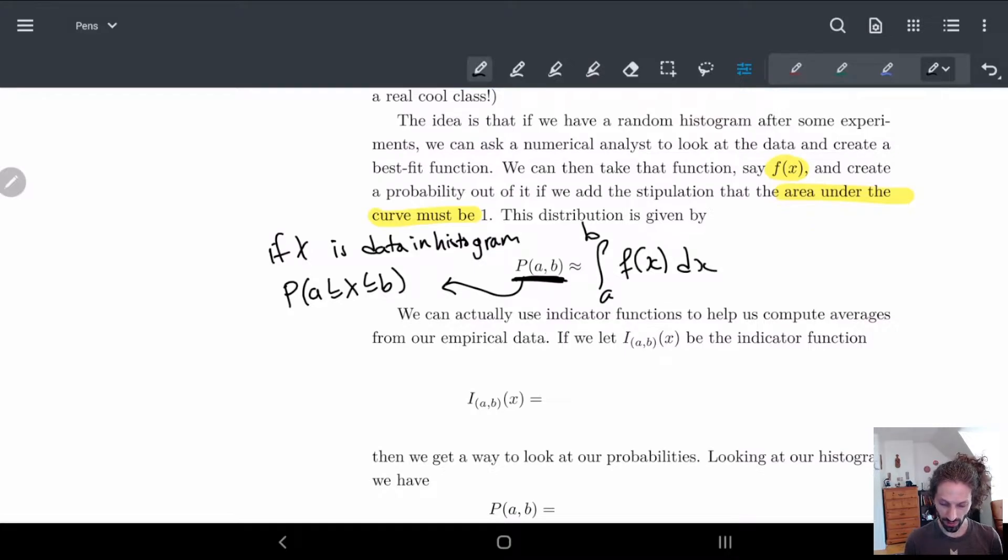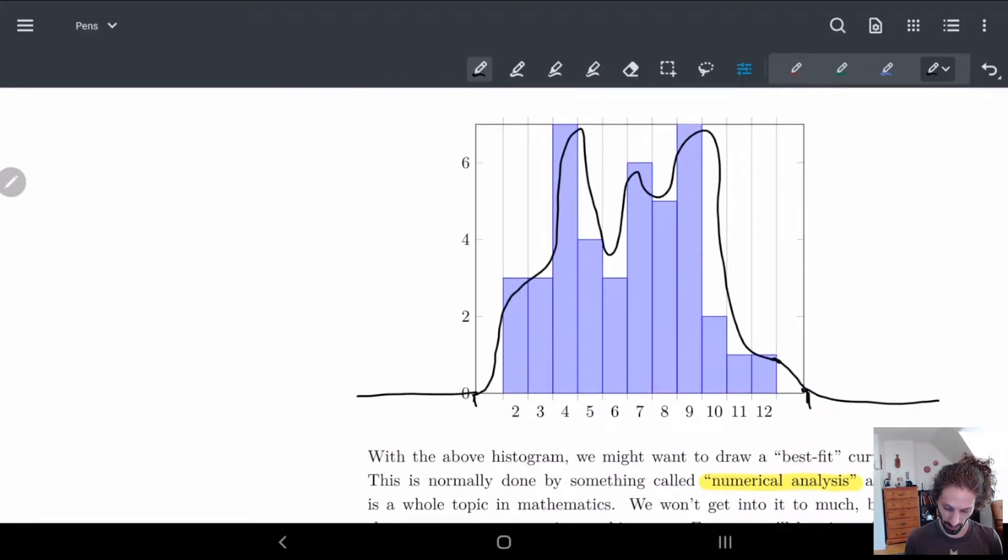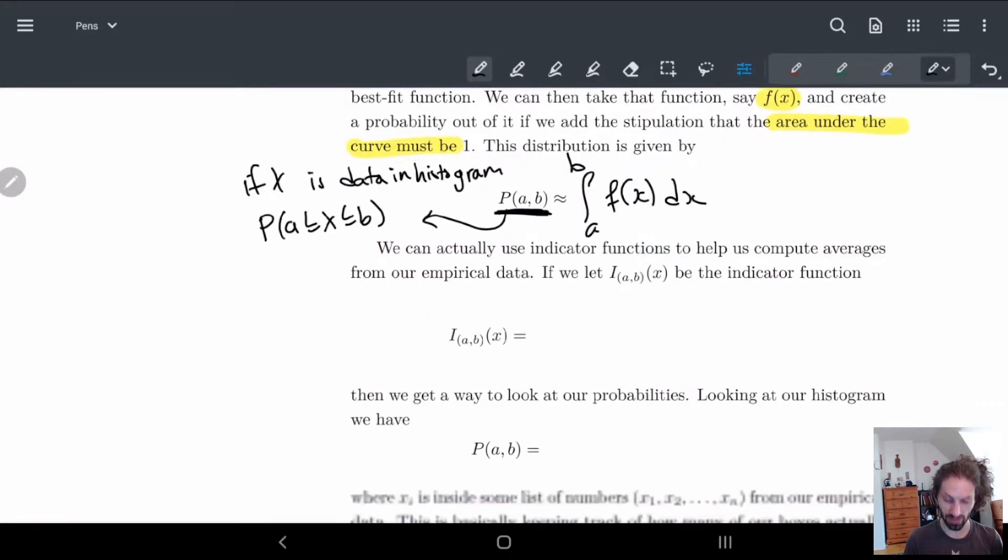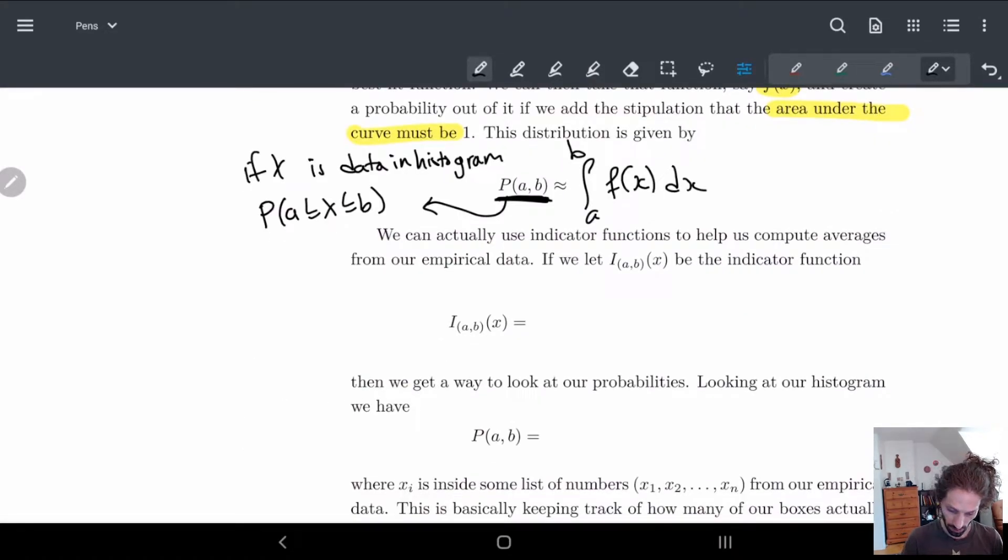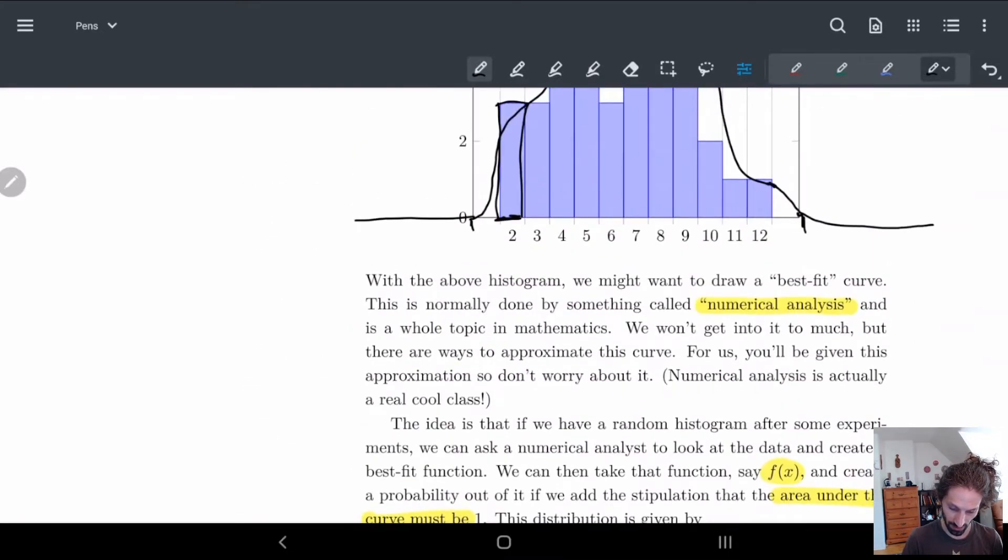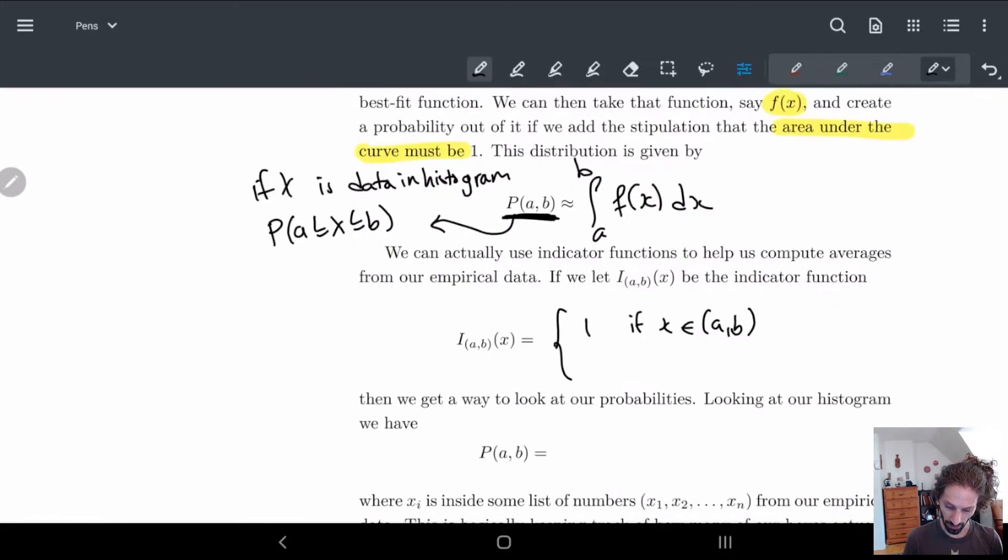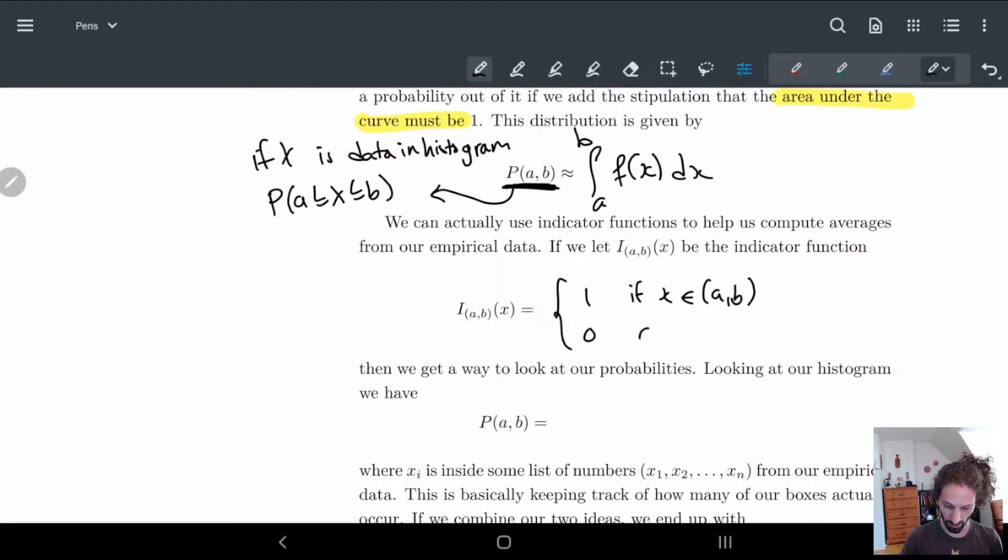Now we can actually use our indicator functions to help us compute the averages over the empirical data. So if I were to look at this empirical data you can kind of see well in order to figure out the average number or something like that I can just take each of these sum up how many I have of them and divide by the total number. So what I can do is first I can make an indicator function so I can look at x and say well if I'll make this 1 if x is contained in my interval, so if x is inside this interval here, this is my a and b, then we'll give it a 1 otherwise we get it as 0 otherwise.